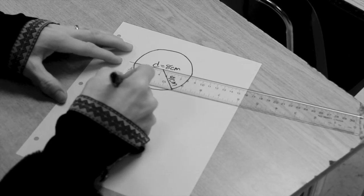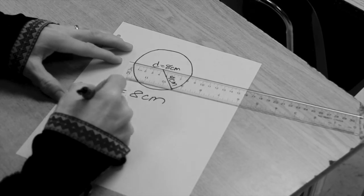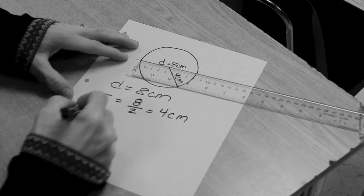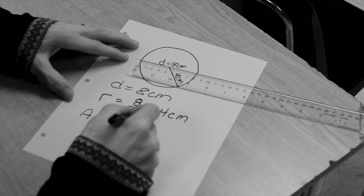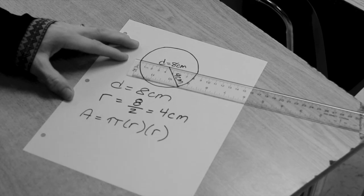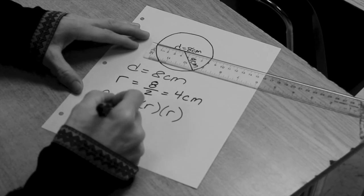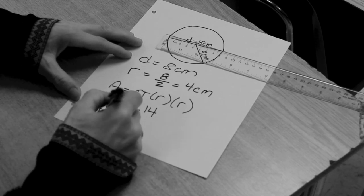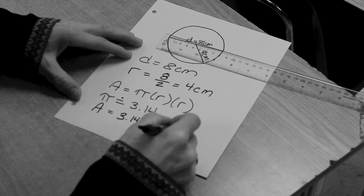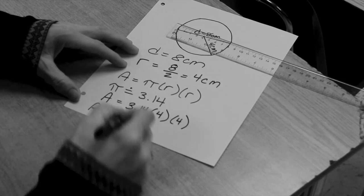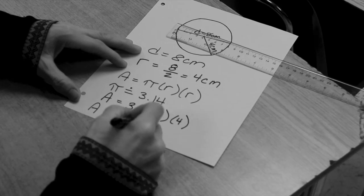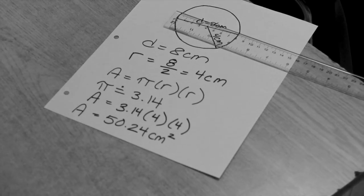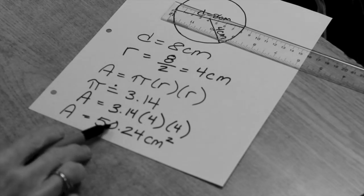So, if I have a circle with a diameter of eight centimeters, I can take that diameter and divide it by two to get the radius. Eight divided by two is four centimeters. Now if I want to figure out the area, that's area equals pi times radius times radius. Pi is about 3.14, so 3.14 times 4 times 4 equals 50.24. The area of this circle is 50.24 square centimeters.